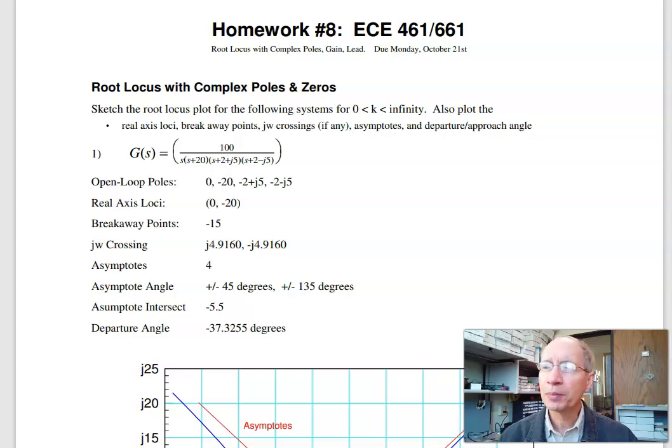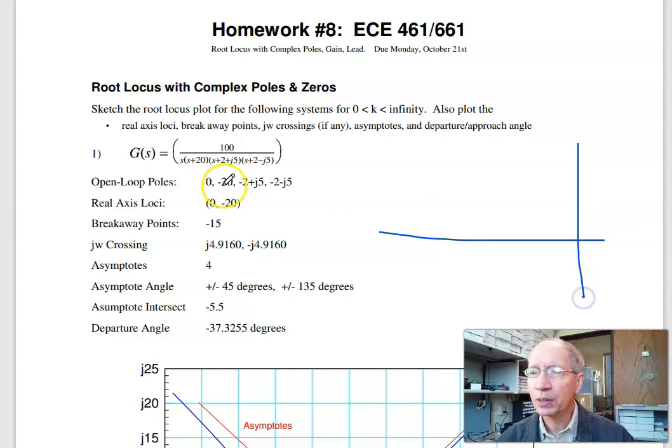The first problem is given a system with two complex poles, find the following: open loop poles, real axis loci, and so on. The open loop poles are where the poles are without feedback - a pole at 0, minus 20, minus 2 plus j5, minus 2 minus j5.